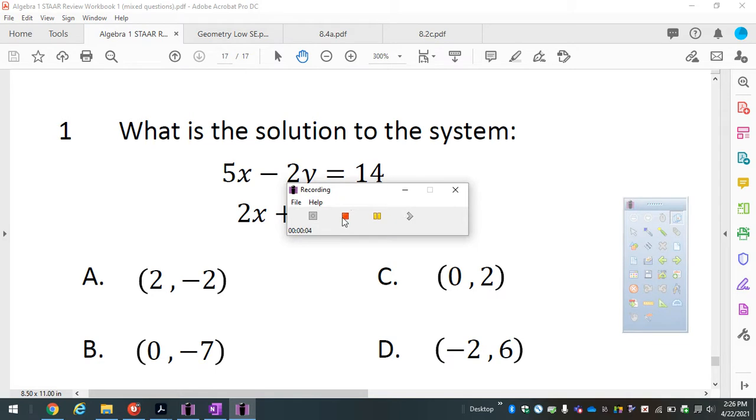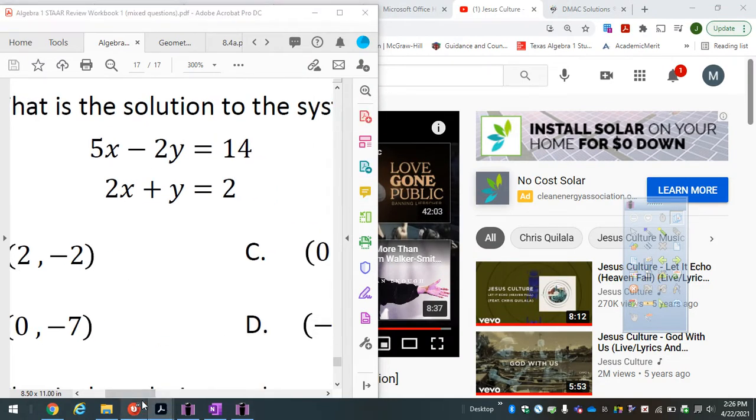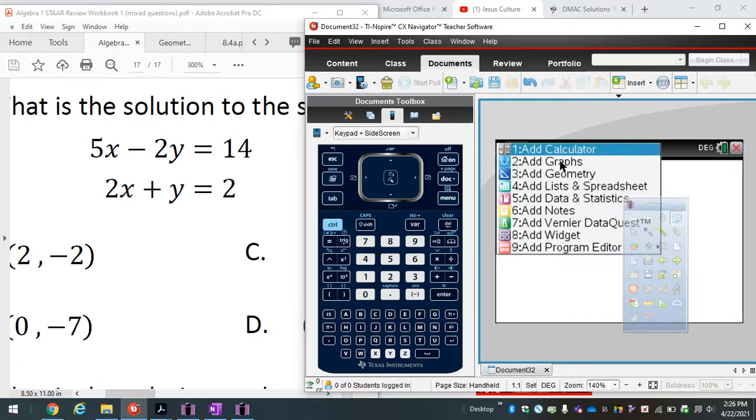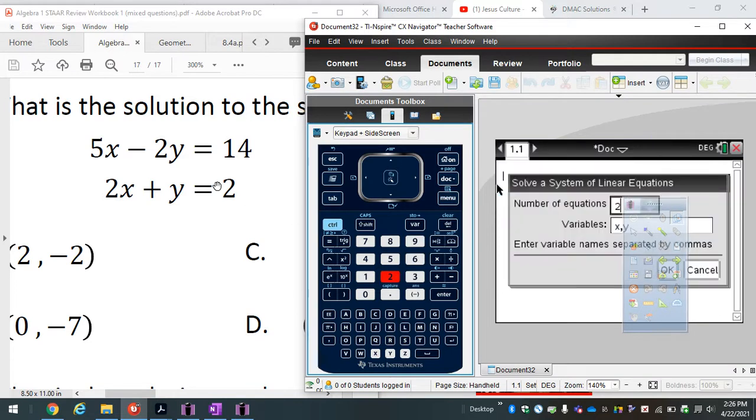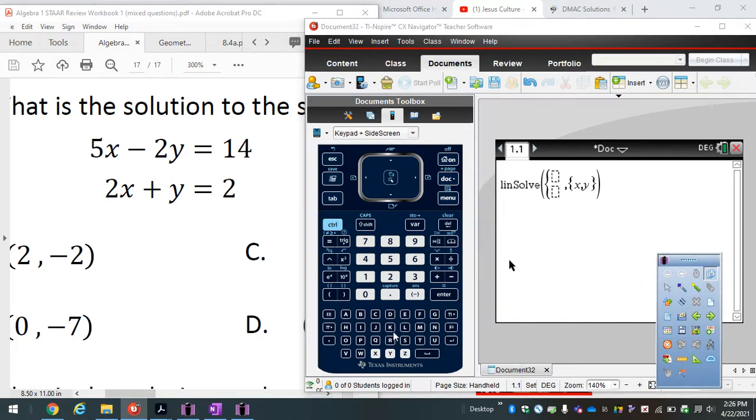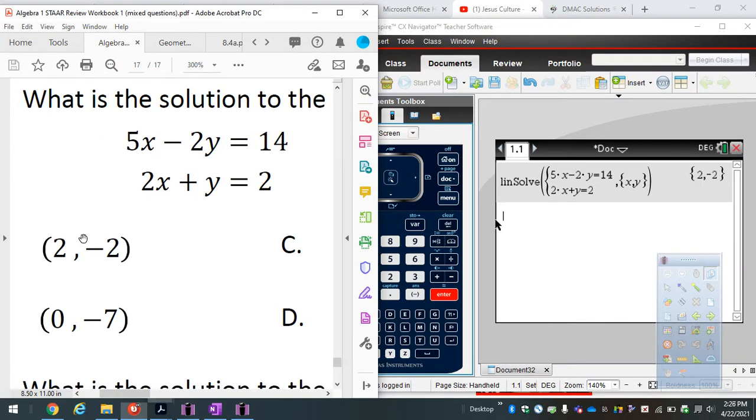Okay, yes, we're in the last one, 717. Let's see what happens here. Go to the calculator and you go to menu 3-2. Type in both of these equations: 5x minus 2y equals 14, 2x plus y equals 2, and there it is.